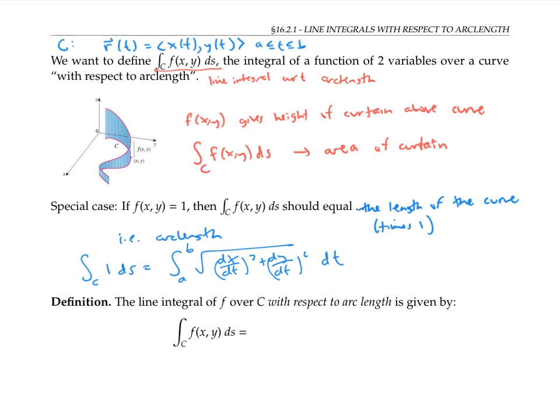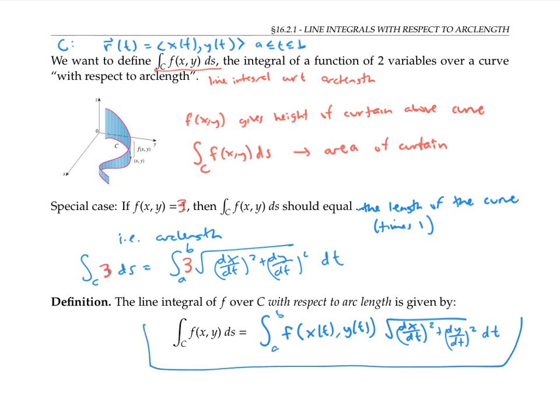Now, if instead our function always had a constant height of three, then the area of our curtain should just be three times the arc length. And more generally, it seems plausible that the area of our curtain should be given by the function's value at each point on the curve times that arc length factor. And that is exactly the definition of a line integral with respect to arc length.